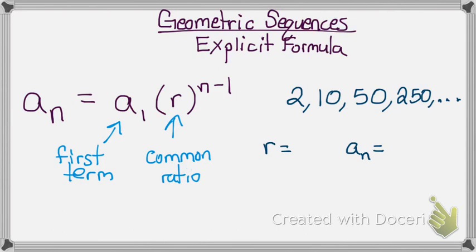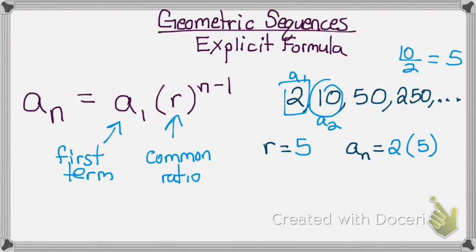Looking at this first example: 2, 10, 50, and 250. First thing I want to find is my common ratio. You take the second term and divide it by the first term. So when I do 10 divided by 2, I will get 5. Therefore my common ratio is 5. Now I'm going to plug everything in to my explicit formula. So it says a sub n equals my first term which is 2 times my common ratio which is 5 to the power of n minus 1. And that's it!